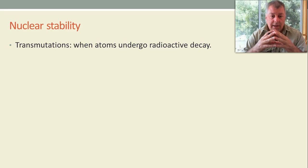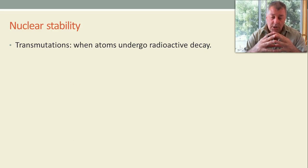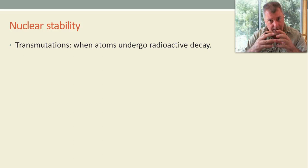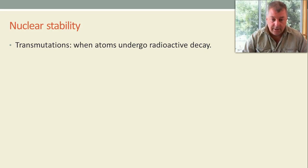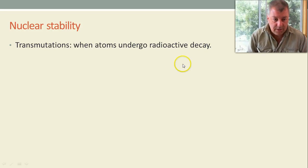Now that decay, transmutation refers to not just when they undergo alpha, beta and gamma decay but also when we change them or nature changes them by bombarding them and hitting them with things. And when we look at nuclear bombardment we're also talking about transmutations because the starting nucleus is not the same as the end nucleus. So that's the terminology we have to be aware of.